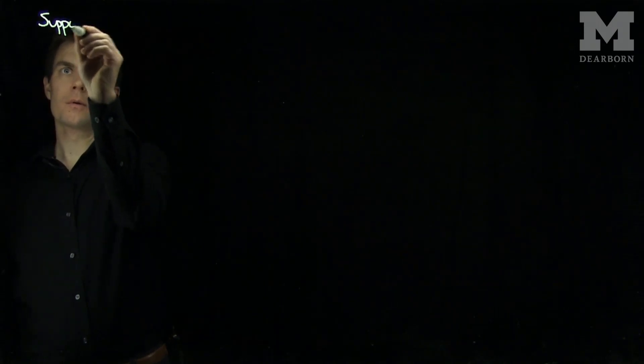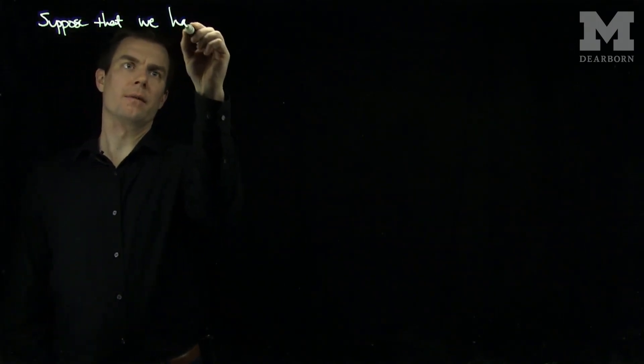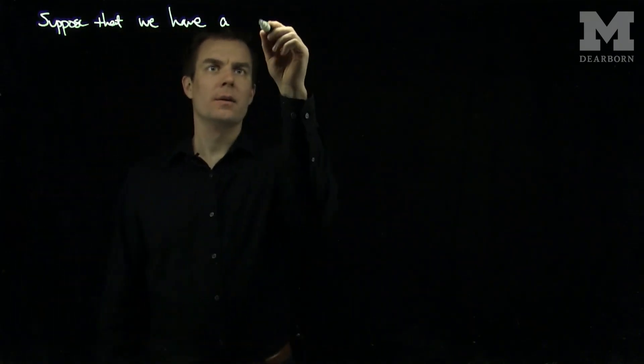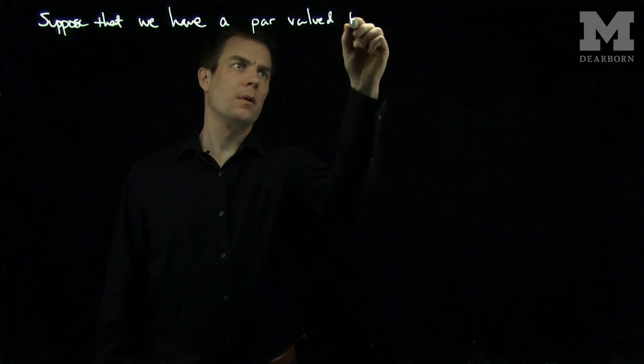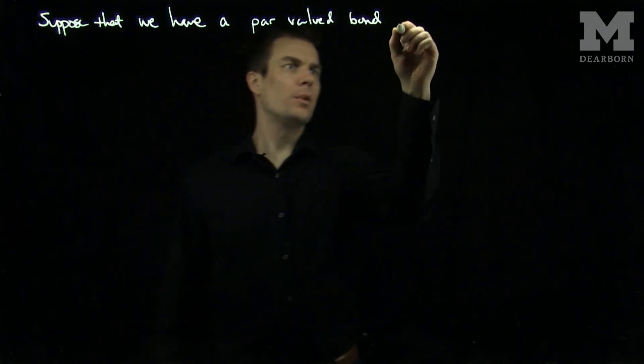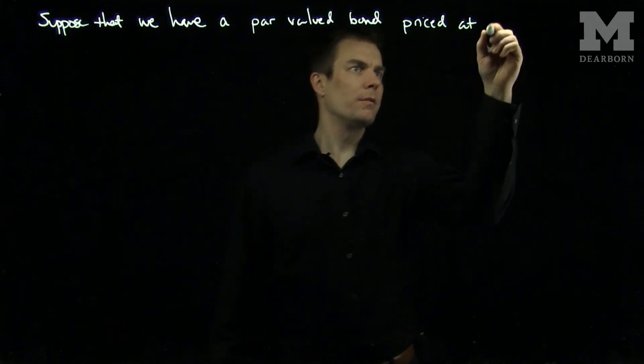Hello students. In this video we'll see an example of computing yield rates of bonds given information on the coupon structure. Suppose that we have a par-valued bond priced at $1,500.